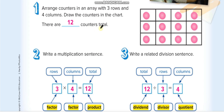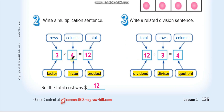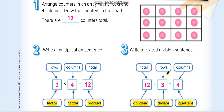Now if we want to know how many total circles we have, we multiply the number of rows by the number of columns. We have four columns and three rows, so four times three equals twelve — twelve total counters. We can write this as three times four equals twelve, or four times three equals twelve.